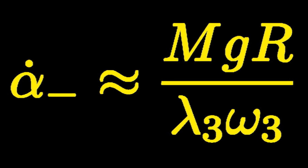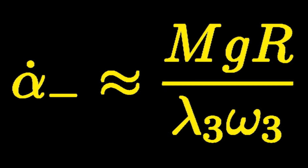Notice that this equation tells us that if we double the torque MGR, we double the precession rate dot alpha. On the other hand, if we double the rotor spin rate omega sub 3, we halve the precession rate dot alpha.